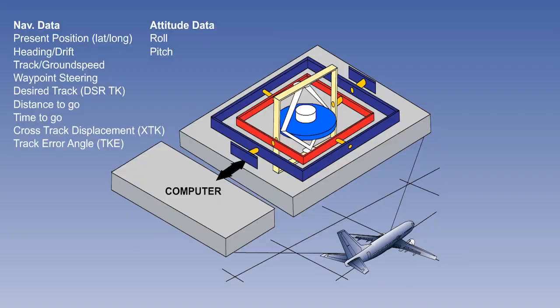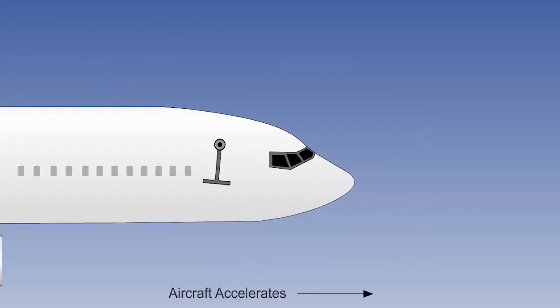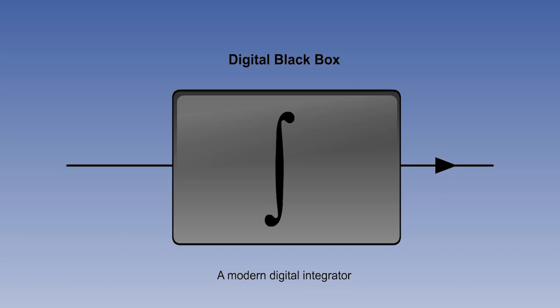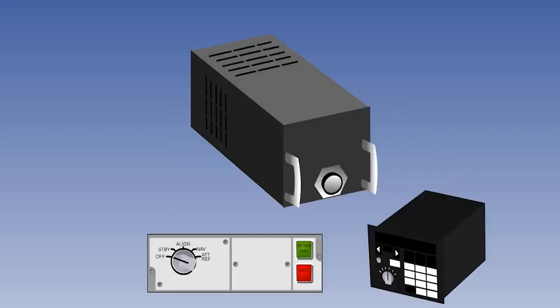We also said that it gives a great deal more information than just present position latitude and longitude. The accelerations are detected by a device known as an accelerometer. They are then converted, firstly into velocities, and secondly into distances gone by integrators. We are now going to examine this measurement and integration process more closely.